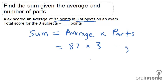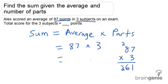We can stack those vertically to make it easier to multiply. 7 times 3 is 21. 3 times 8 is 24, plus 2 is 26. So our sum is 261 points.